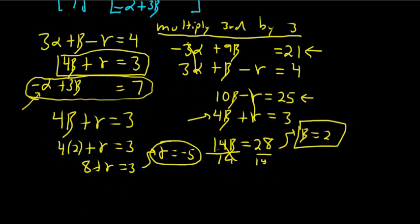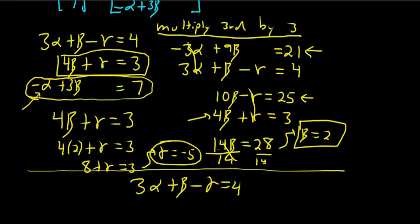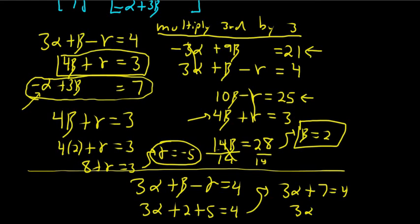Now I just need alpha. So I'm going to use the first equation to find alpha. So we have 3 alpha plus beta minus gamma equals 4. So you have 3 alpha. Beta was 2. Gamma was negative 5, but there's already a negative here. So it's going to be a 5. That's equal to 4. So you have 3 alpha plus 7 equals 4. So 3 alpha equals negative 3. Divide by 3. So alpha is negative 1. Boom.